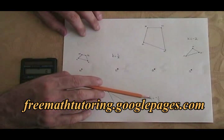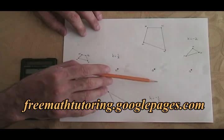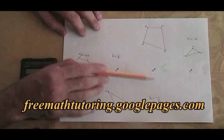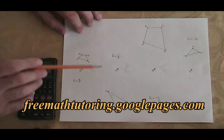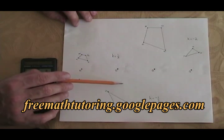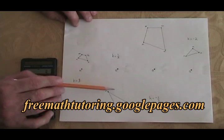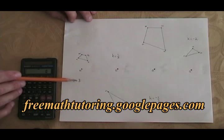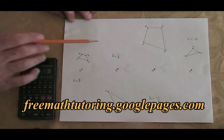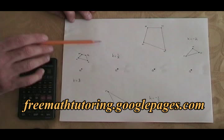Here, k equals negative one-third: the copy is going to be on the other side of the zero dot, about one-third as big, and one-third as far from the origin as the original was. Where k equals one-half, it's going to land on the same side, be half as big as the original, and half as far from the origin. And where k equals three, it's going to be on the same side, three times as big as the original, and three times as far from the origin.